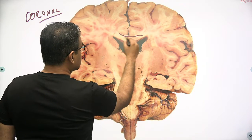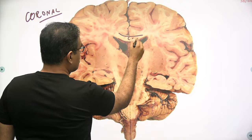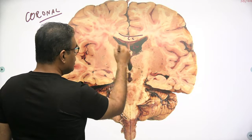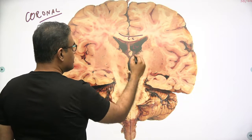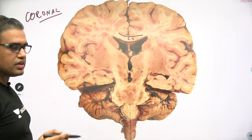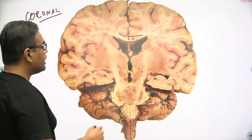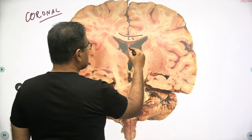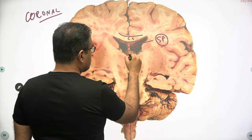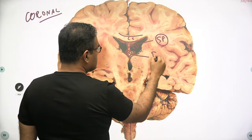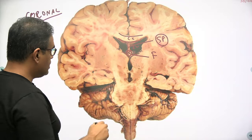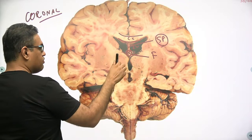This area is the corpus callosum. That is a lateral ventricle over there. Between the two lateral ventricles, as we saw in the medial surface, we have the septum pellucidum — labeled SP. Below this, you have a thickening known as the fornix.